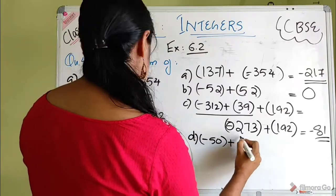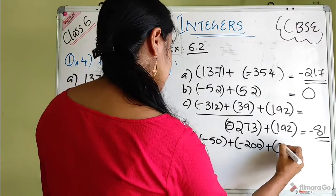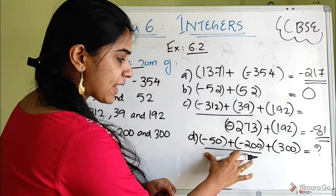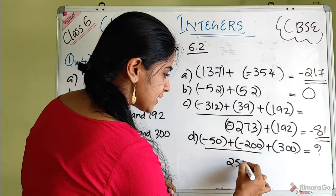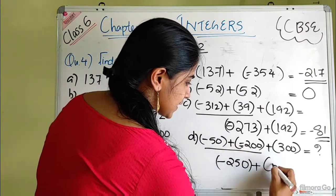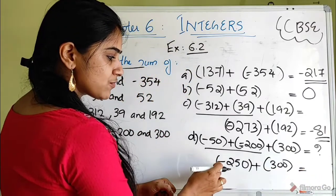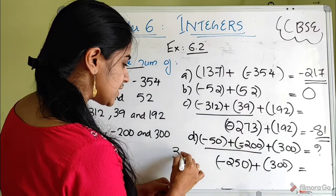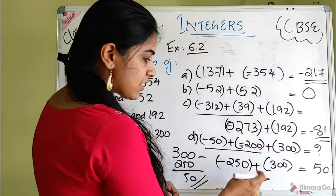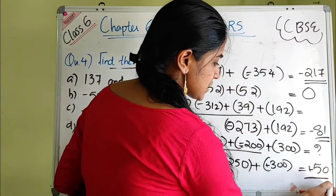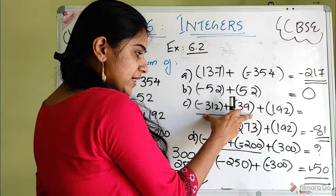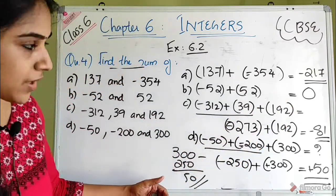Question D: minus 50 plus minus 200 plus 300. Group same signs first: minus 50 plus minus 200 equals minus 250. Now minus 250 plus 300 — different signs, difference is 50. The bigger number is 300 which is positive, so the answer is positive 50.